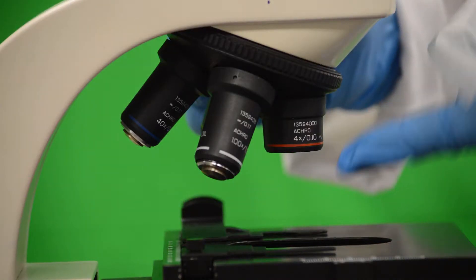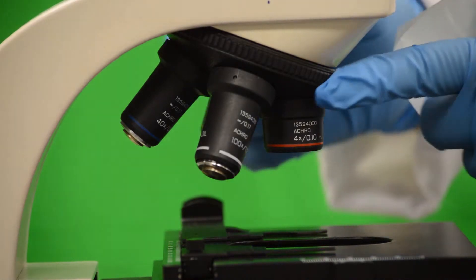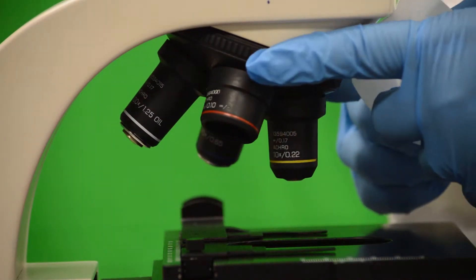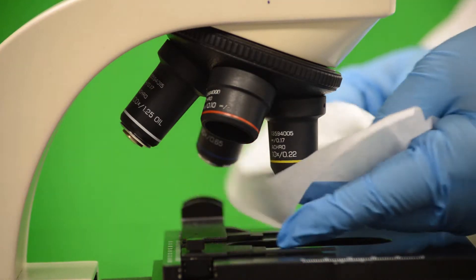Take a sheet of lens paper, crumble it, and spray it once with lens cleaner solution. Now wipe the lens in a circular manner.